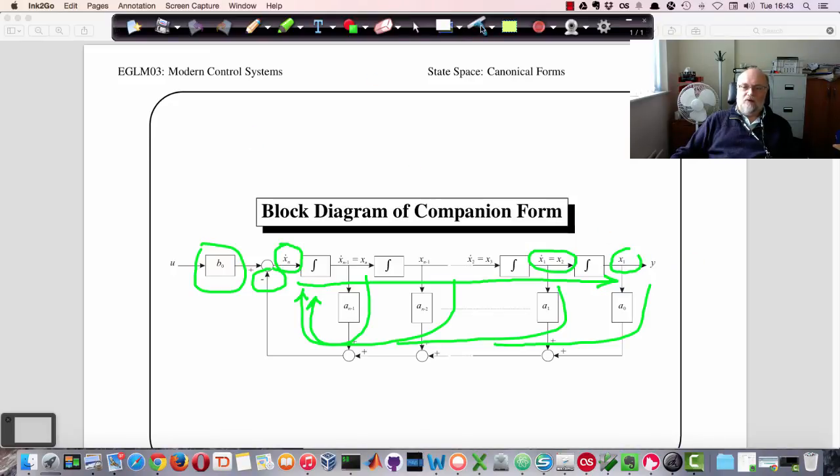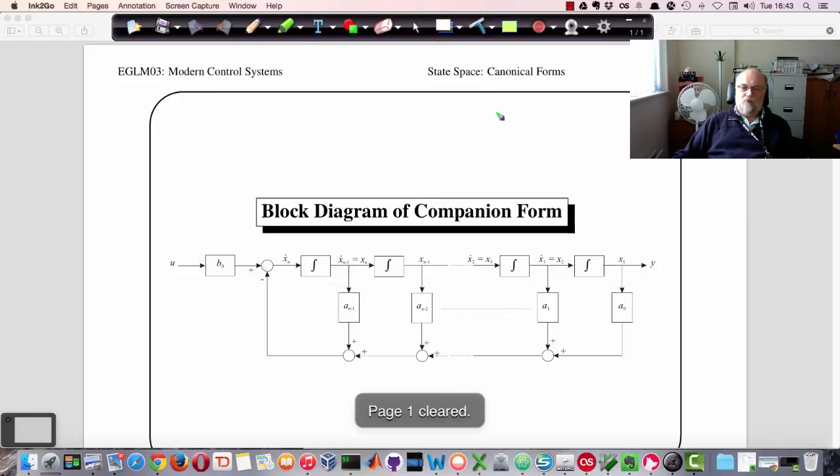So this is our block diagram and this is the representation that we get. And we're just adding all these together and then summing them at the end to produce the equation that we wish to solve. So that's the companion form and that's what it looks like. If we want to model it in state space using Simulink, say, or some other block diagram tool.